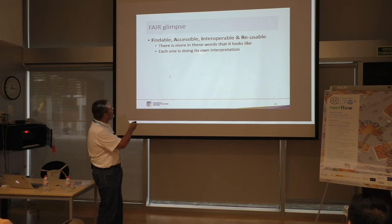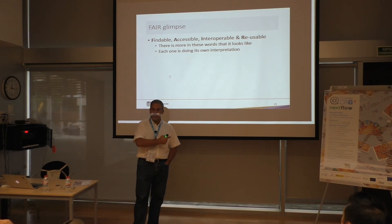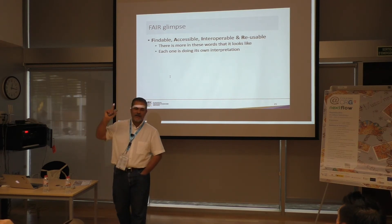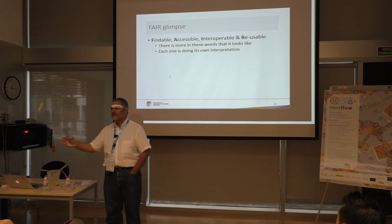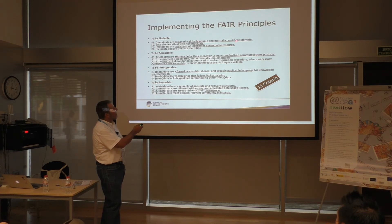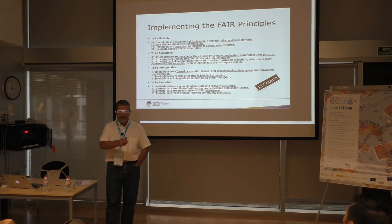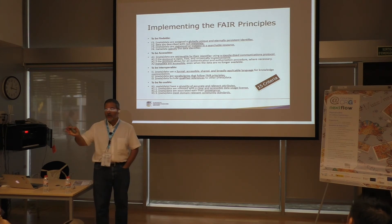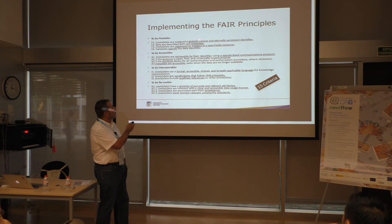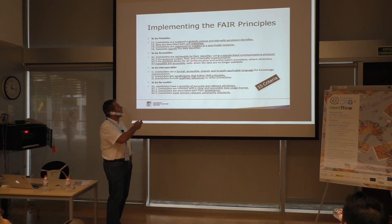I put here just the original definition — these 15 criteria — which is quite open, as you can see. But when you say 'findable,' they are clearly saying this should be a persistent identifier that is globally unique and eternal. That's a very strong word. We say 'long-term or persistent,' which is much easier than saying 'eternal.' So it's not just that you're Google or anyone else on your website — you need a persistent identifier globally unique for your artifact.